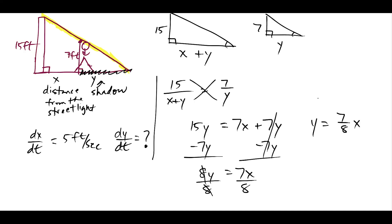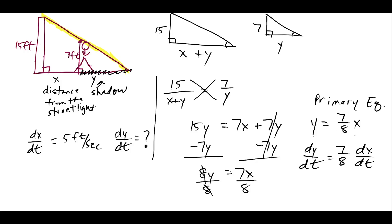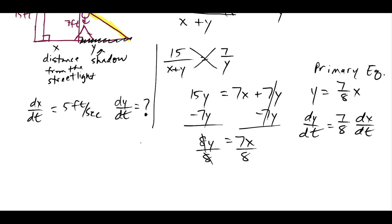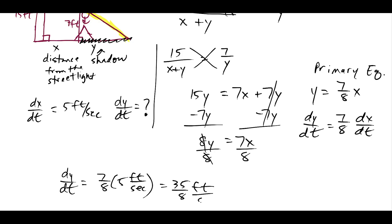Taking the derivative with respect to time: dy/dt equals seven-eighths times dx/dt. Plugging in dx/dt equals 5 feet per second, we get dy/dt equals seven-eighths times 5, which equals 35 over 8 feet per second. That is the rate at which Jonathan's shadow is lengthening.